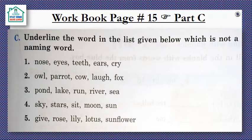Number three: pond, lake, river, sea — these four are naming words related to water bodies. The one different word is run. Run is an action word, so run is underlined.